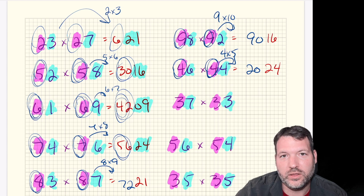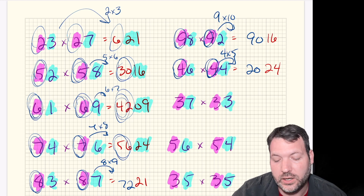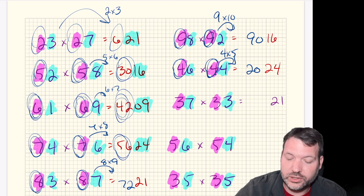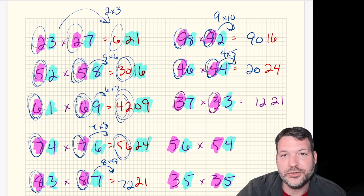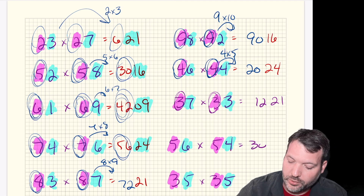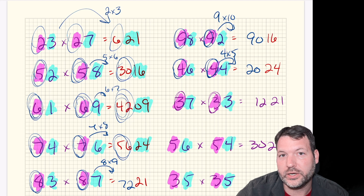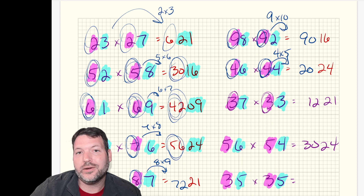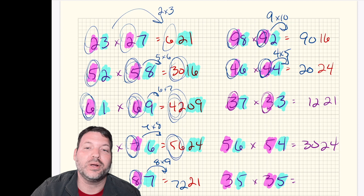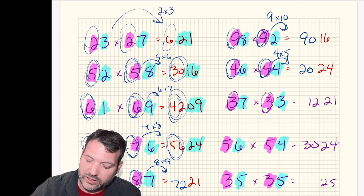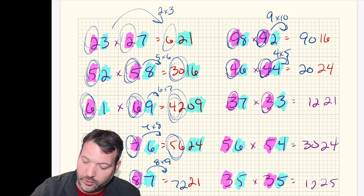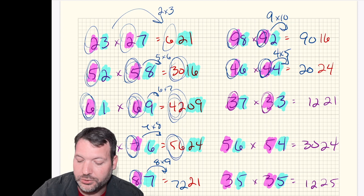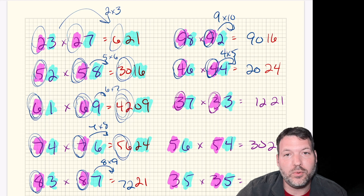Let's try some practice problems. For 37 times 33: ones digits multiply to 21, and 3 times 4 is 12, giving 1221. For 56 times 54: the answer is 3024. And 35 times 35: it ends in 25 (since 5 times 5 is 25), and 3 times 4 is 12, giving 1225. That's the squaring trick for numbers ending in 5.